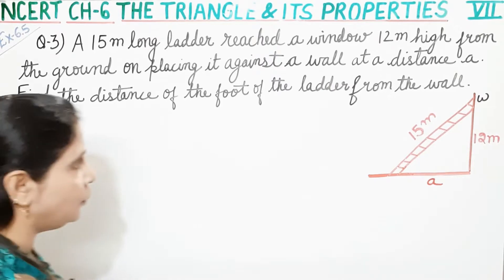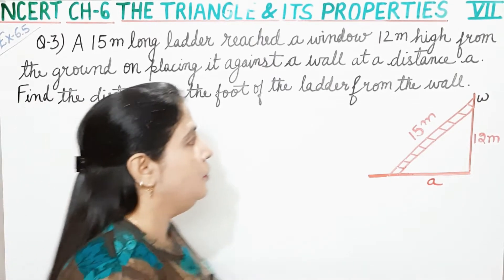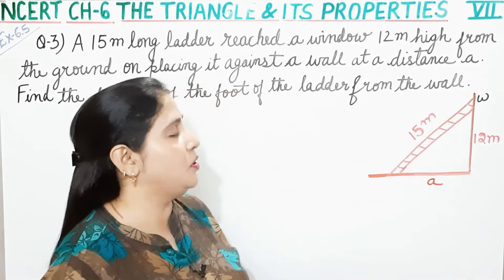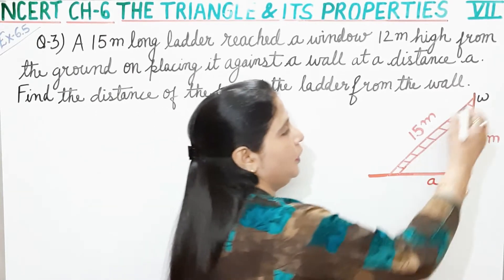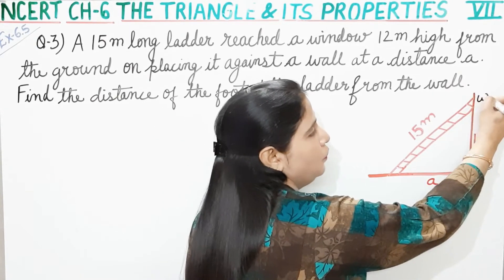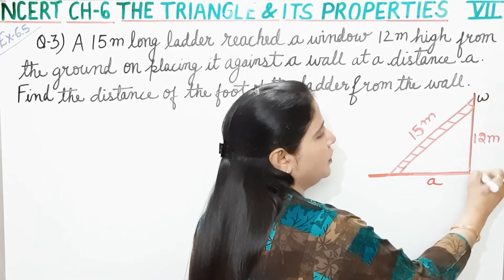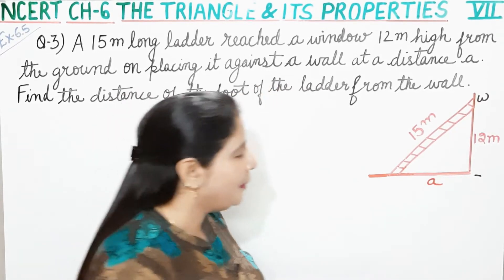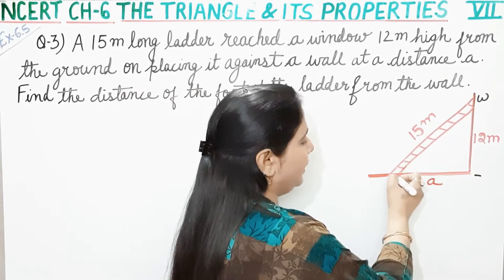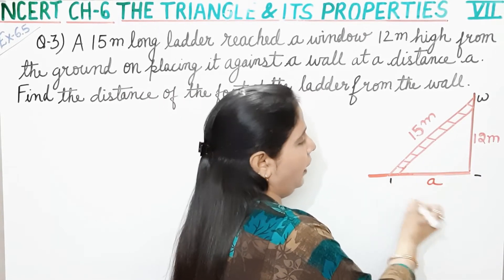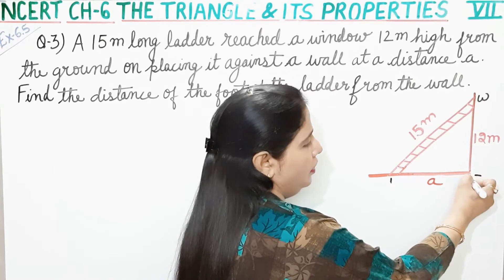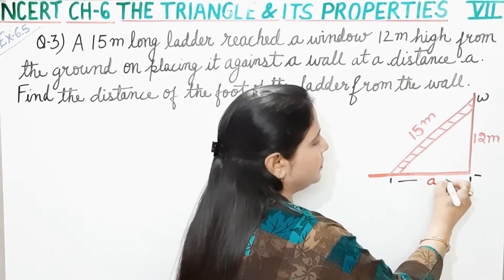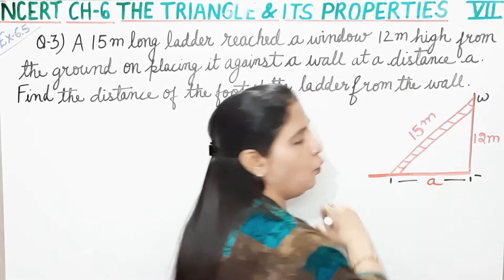Find the distance of the foot of the ladder from the wall. Yeh jo ladder hai, this is 15 meter long ladder, yeh ek window tak pahunch rahi hai aur jo window hai uska ground se jo distance hai woh 12 meter hai. Hame ye nikalna hai ki ladder ka foot aur is wall ke beech ka distance A kitna hai.